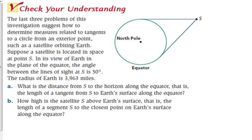Let's use all this information here to work out an application problem. So we are going to find some measures about this satellite that is orbiting the Earth. So they tell us that a satellite is located in space at point S in its view of Earth in the plane of the equator. Picture a globe. You're sitting back on the ear of the satellite. You're looking directly at the equator. Equators that I love. That's what this scenario is talking about.